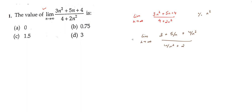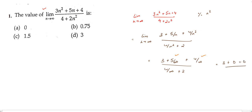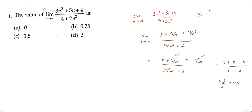Now, putting n as infinity: we have 3 + 5/∞ + 4/∞ divided by 4/∞ + 2. As you know, anything divided by infinity gives 0. So 5/∞ gives 0, 4/∞ gives 0 in the numerator, and 4/∞ gives 0 in the denominator.